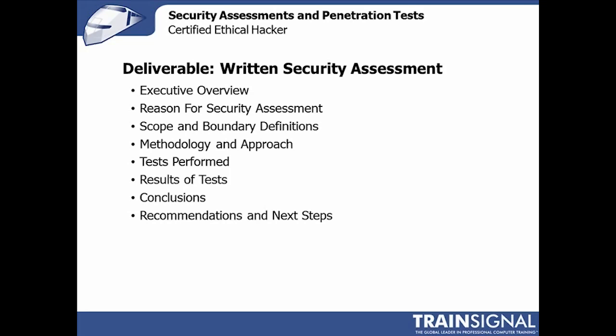This basic framework is a sample table of contents for a written security assessment. I almost always start with an executive overview — two or three paragraphs on what the assessment was about, what happened at a high level, and the results at a high level. Then I get into details: why was the assessment engaged, an exhaustive definition of scope, specific exclusions or inclusions, the methodology and plan, how I approached the attack, and what tests I actually did.